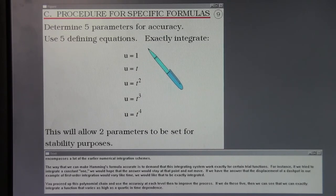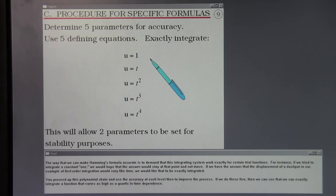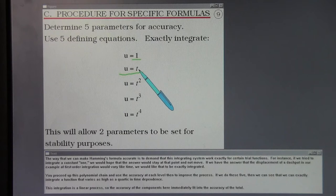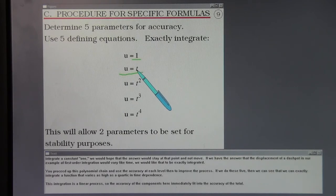The way that we can make Hamming's formula accurate is to demand that this integrating system work exactly for certain trial functions. For instance, if we tried to integrate a constant one, we would hope that the answer would stay at that point and not move. If we have the answer that the displacement of a dashpot in our example first-order integration would vary like time, we would like that to be exactly integrated.